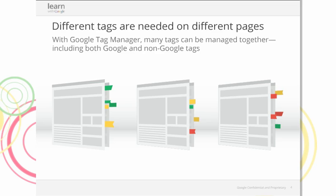Before getting into the details, I wanted to talk about why we built Google Tag Manager. As marketing becomes more sophisticated, there's a lot more information that can be collected. With this large volume of information come challenges with the ever-growing number of tags customers have to deal with. Some challenges include delays to tag deployment — in some cases up to nine months to get one single tag on a page — which can delay campaigns and marketing tool deployment.